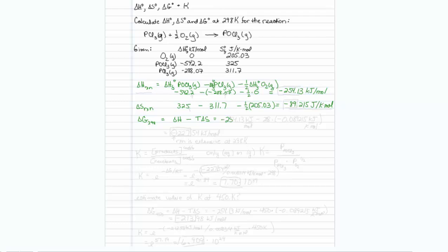We could just substitute our values from above. We have a minus 254.13 kilojoules per mole for our delta H. Our temperature is 298, and our delta S, since the first value is in kilojoules, I should put my delta S in kilojoules. That would be a minus 0.089215 kilojoules per Kelvin mole, which I get by dividing this answer by 1000. Plugging that into my calculator, I get minus 227.54 kilojoules per mole.